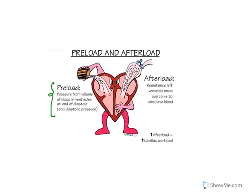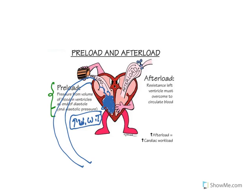Preload is the pressure from the volume of blood in the ventricles at the end of diastole. All the veins drain their blood into the right atria, from which it falls to the right ventricle — this is venous return. When venous return is increased, congestion of the ventricle results in increased pressure on the ventricular wall, increasing ventricular wall tension. This sustained ventricular wall tension causes cardiac muscle damage. Afterload is related to the resistance the left ventricle must overcome to circulate blood.